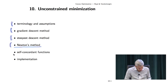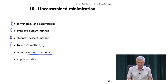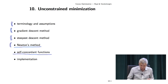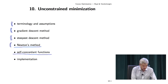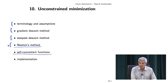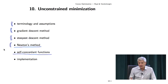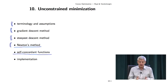Then we'll switch gears and talk about something quite modern — a theory only 10 to 15 years old: the theory of self-concordant functions, pioneered by Nesterov and Nemirovsky. It's a new way to analyze Newton's method, and it's the method that will be successful later in the course in showing that interior point methods actually have polynomial time complexity on convex optimization problems.